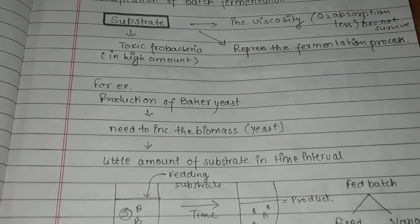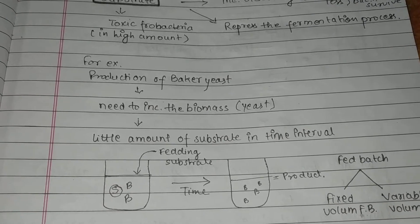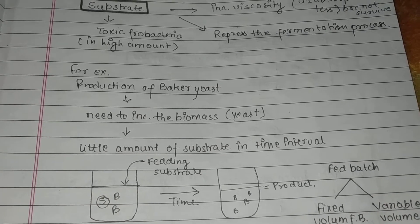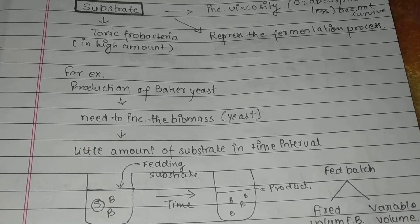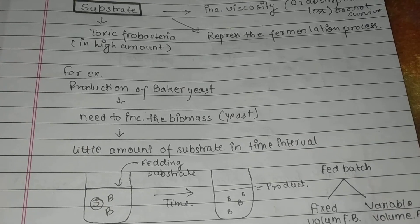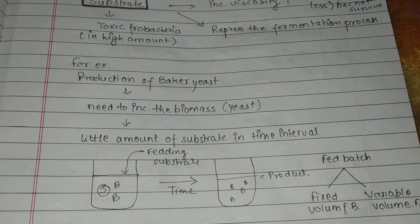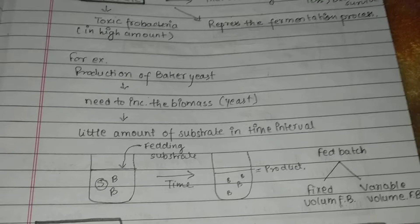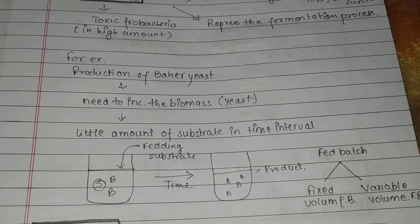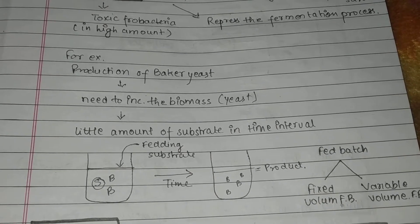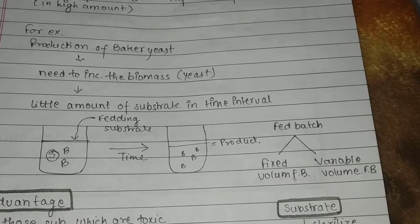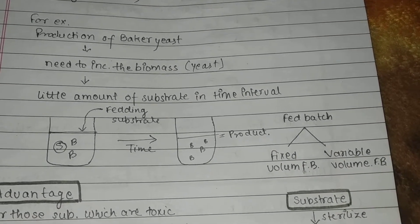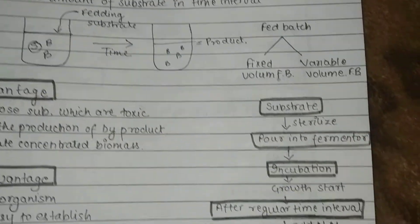In the fed-batch fermentation process, we firstly need to increase the biomass. For example, if we are doing production of baker's yeast, we use yeast and then put a little amount of substrate at different time intervals in the batches, and after some time our product will be formed. Fed-batch fermentation is of two types: fixed volume fed-batch fermentation and variable volume fed-batch fermentation.